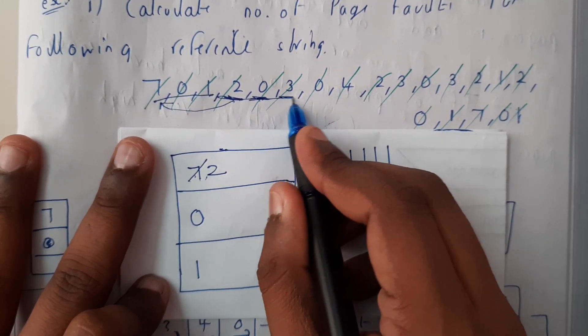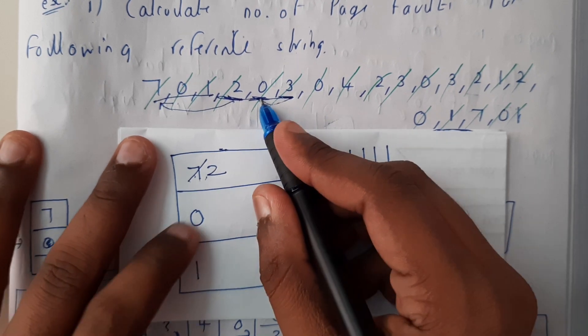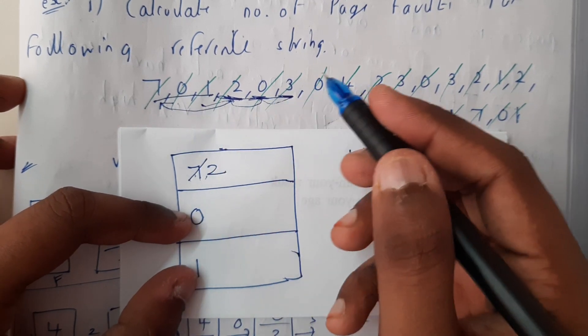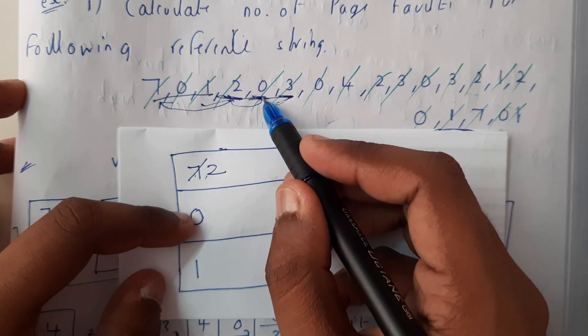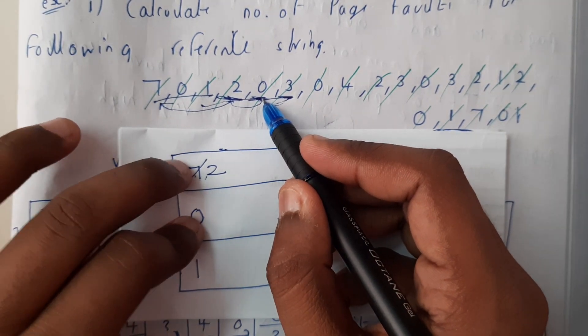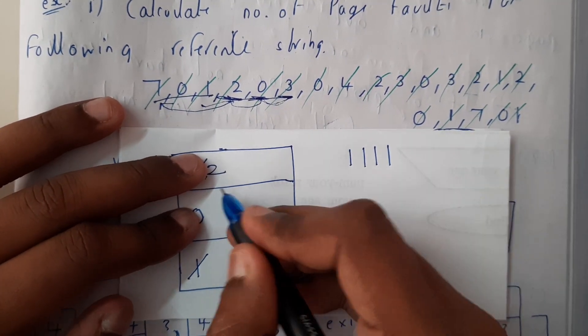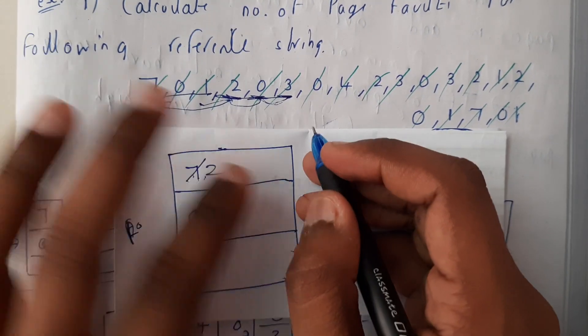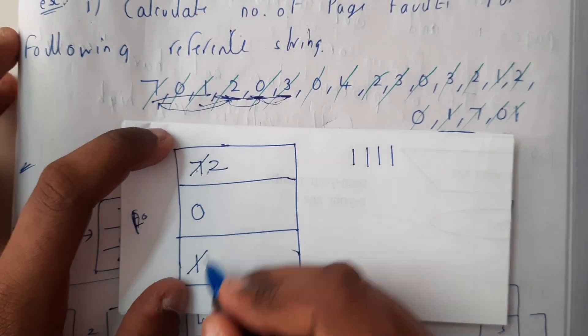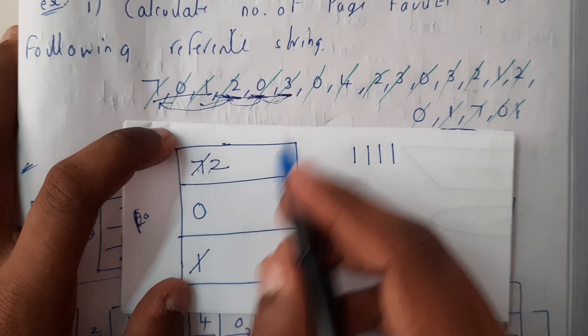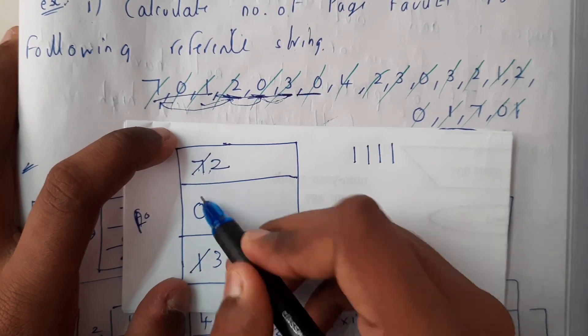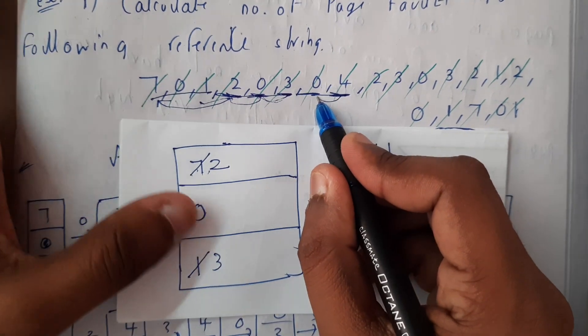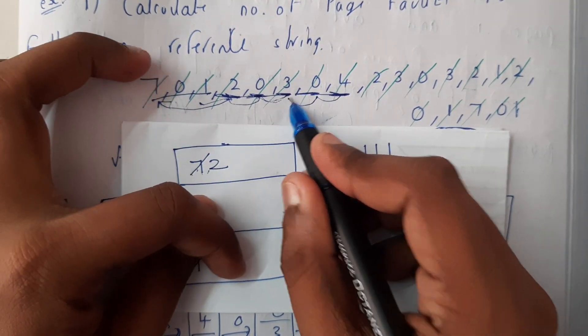Zero is already existing, so we're done with zero. Then three - what is the previously used? Zero, and before that two, and before that one. So the oldest one is one. So instead of one we will be getting three. After that again zero - zero is already available. Again after that four. Four is not available so come back: zero is there, three is there, so the left one is two. So in place of two, place four.